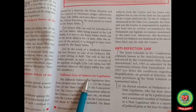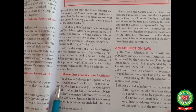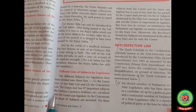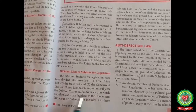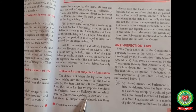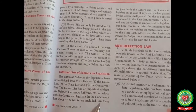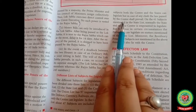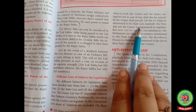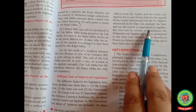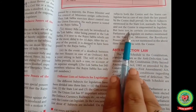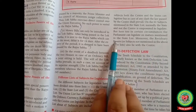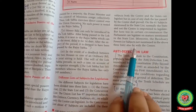Different list of subjects for legislation: The different subjects for legislation have been divided into three lists — the Union List, the State List, and the Concurrent List. The Union List has 97 important subjects like Defence, Currency, Railways, etc., on which only the Centre can legislate. In the Concurrent List, about 47 subjects are included; on these subjects, both the Centre and the State can legislate, but in case of any clash, the law passed by the Centre shall prevail. On the 61 subjects mentioned in the State List, normally the State and not the Centre is empowered to legislate. But in certain circumstances, the parliament can legislate on matters in the State List. Moreover, the residuary powers — subjects not mentioned in the above three lists — also lie with the Centre.